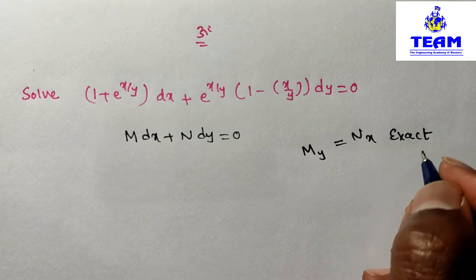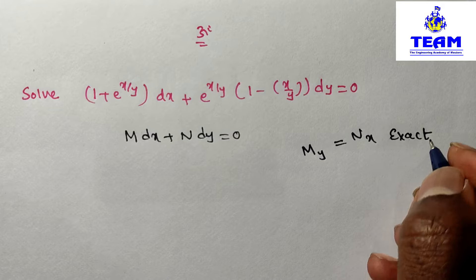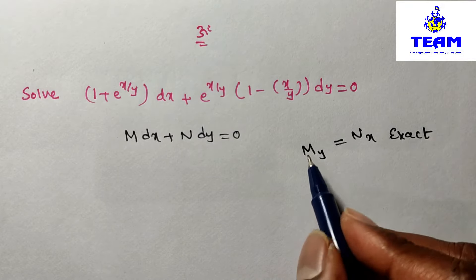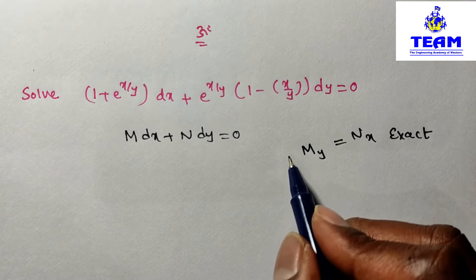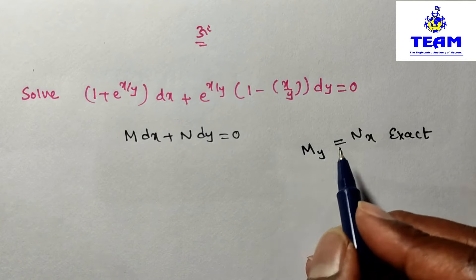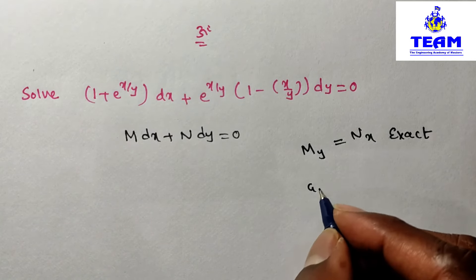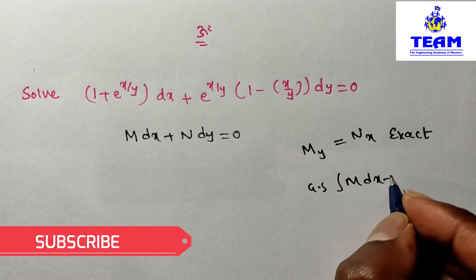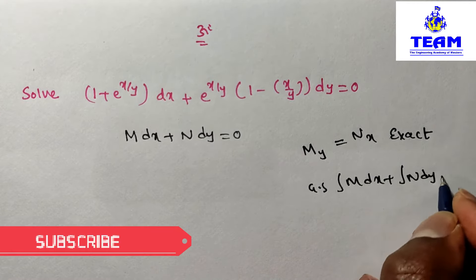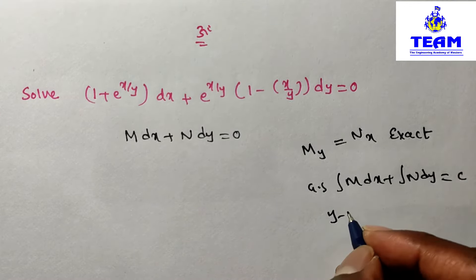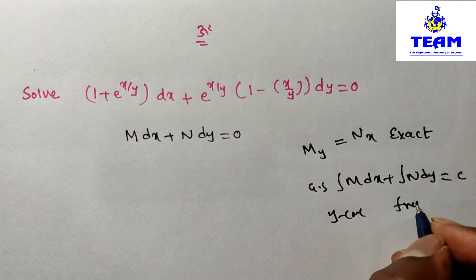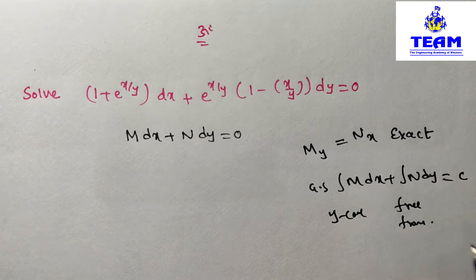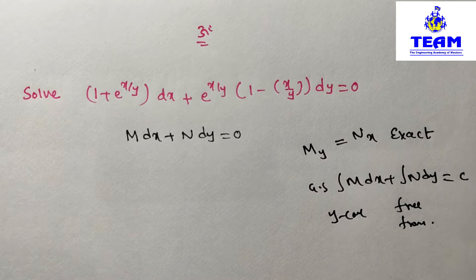We have different methods to solve the non-exact. Now in this problem, we are verifying whether the given problem is exact or not. If it is exact, the general solution is: integral of M dx plus integral of N dy equals c, where y is treated as constant and the second integral is free from x terms. If it is non-exact, the method will be discussed in the next videos.